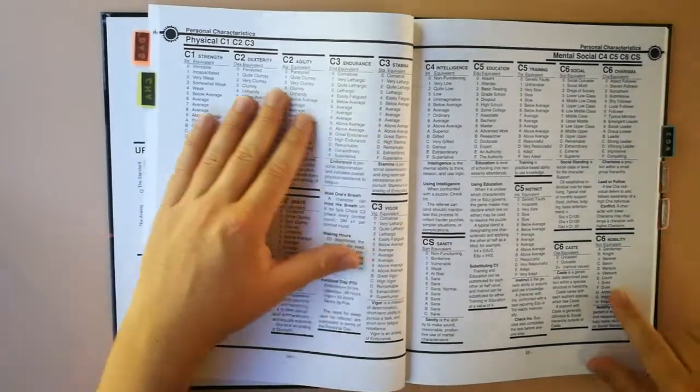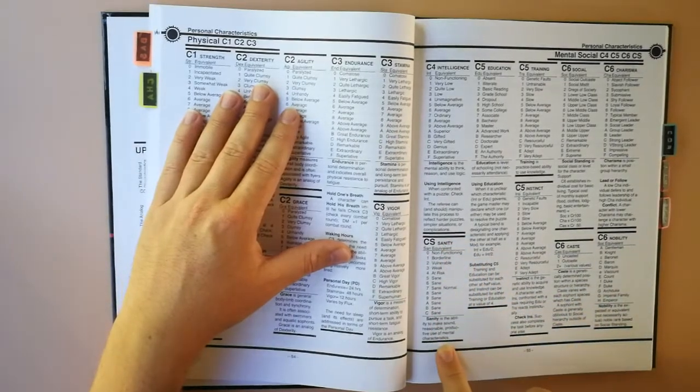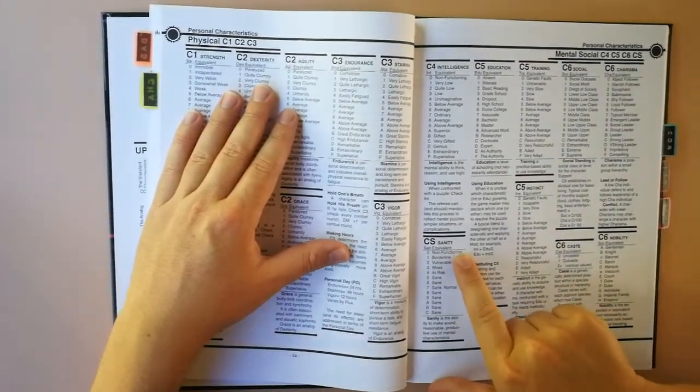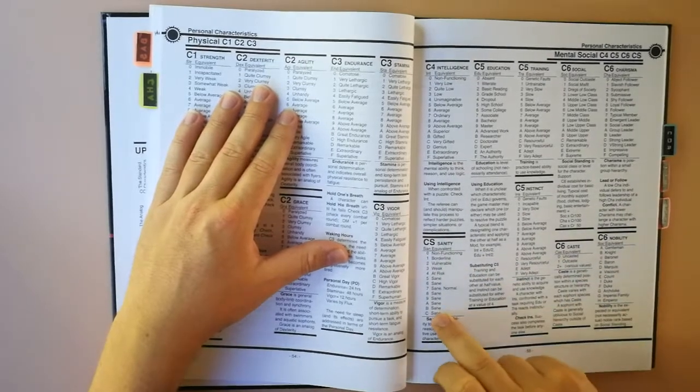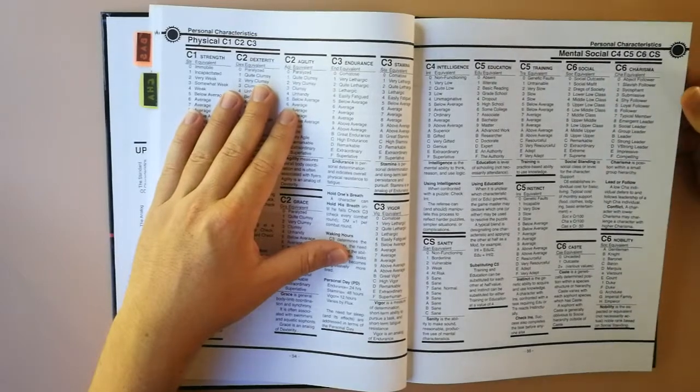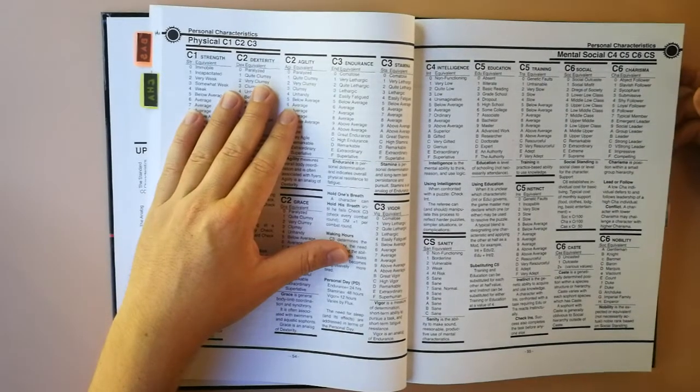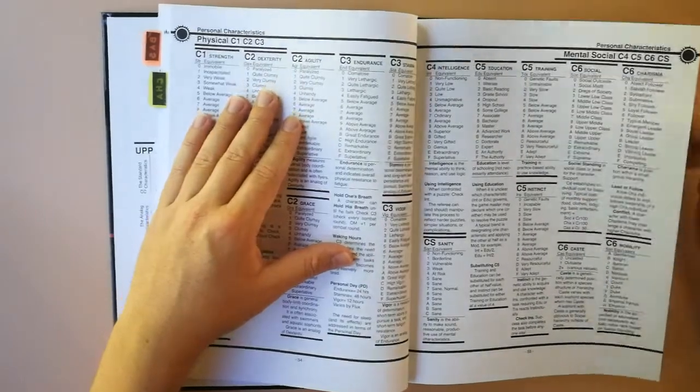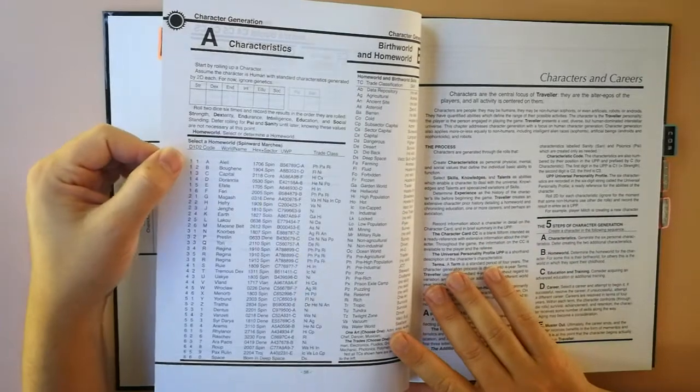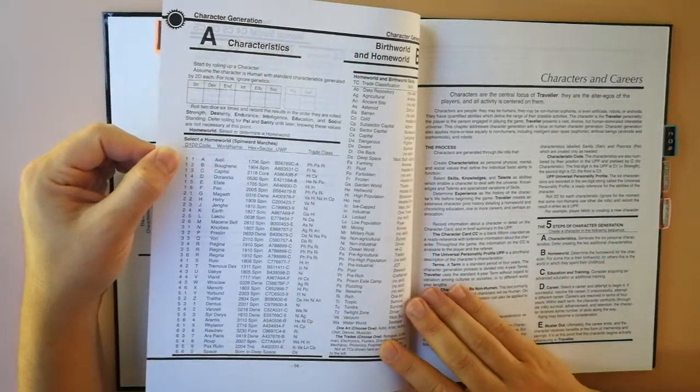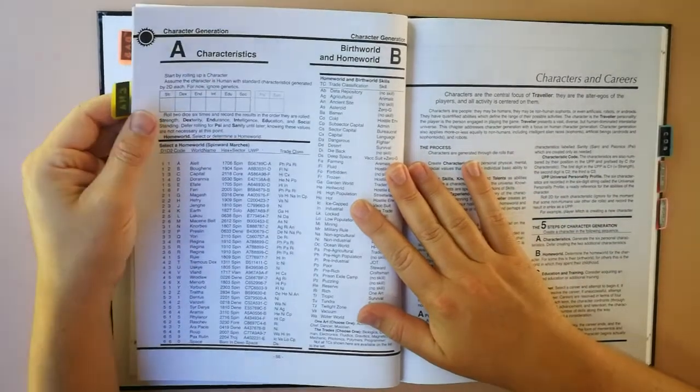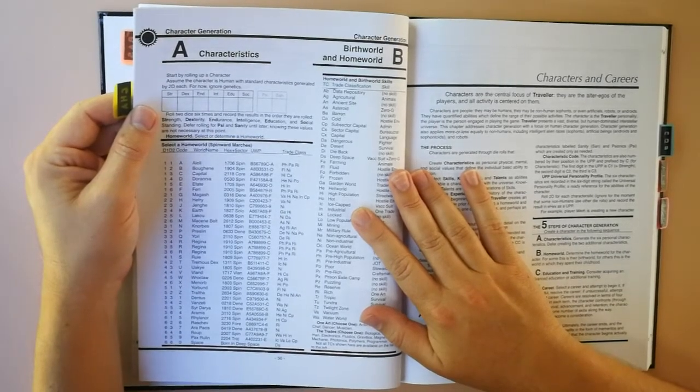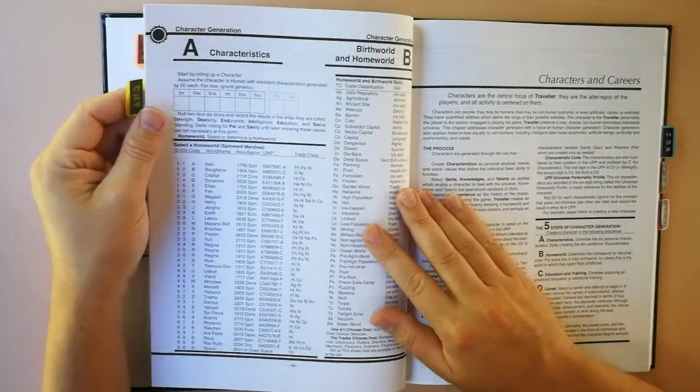C3, which is to say characteristic 3, determines the natural day, the need for sleep, and the ability to perform tasks. The mental and social characteristics covering C4 through 6 and, optionally, sanity, which range from non-functioning to a series of sanes. I suppose one cannot be supersane. As well as education, which may be replaced by training or instinct in those sophents who don't receive training. Character generation. Start by rolling up a character. Assume the character is human with standard characteristics generated by 2D each. For now ignore genetics.